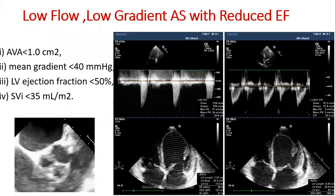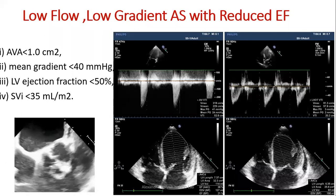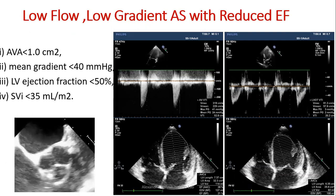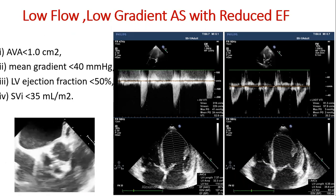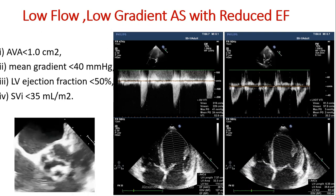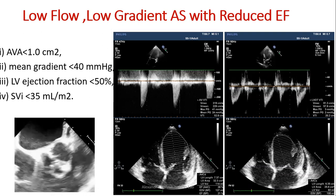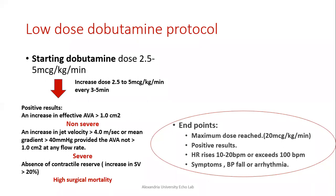In low-flow, low-gradient AS with reduced ejection fraction — diagnosed by aortic valve area less than 1 cm², mean gradient less than 40 mmHg, EF less than 50%, and stroke volume less than 35 mL/m² — we use the low-dose dobutamine protocol, starting at 2.5 µg/kg/min and increasing by 2.5 µg/kg/min every 3–5 minutes. If the effective orifice area increases above 1 cm², this is non-severe AS. If velocity or gradient exceeds 40 mmHg and the aortic valve does not change at any flow rate, this indicates severe AS. We must also report contractile reserve as it is important for assessing surgical mortality.